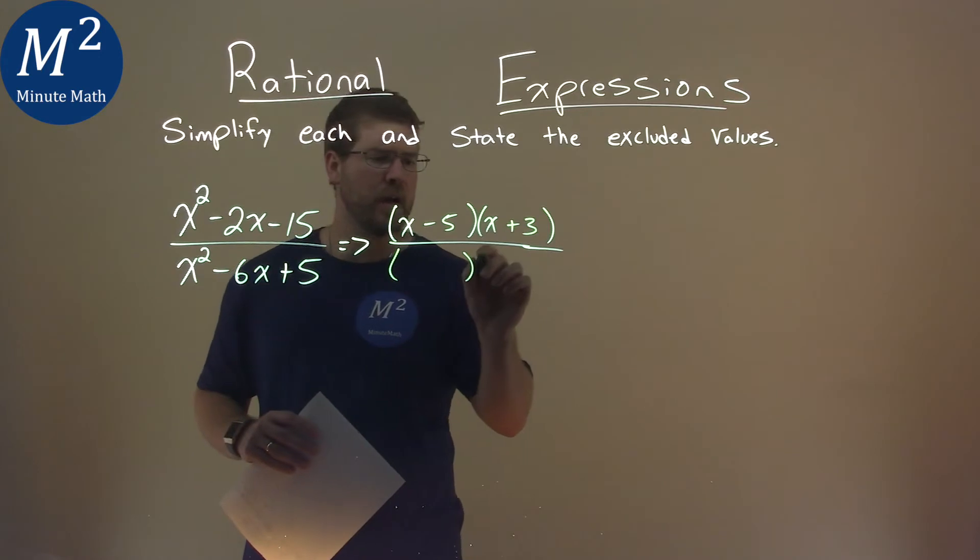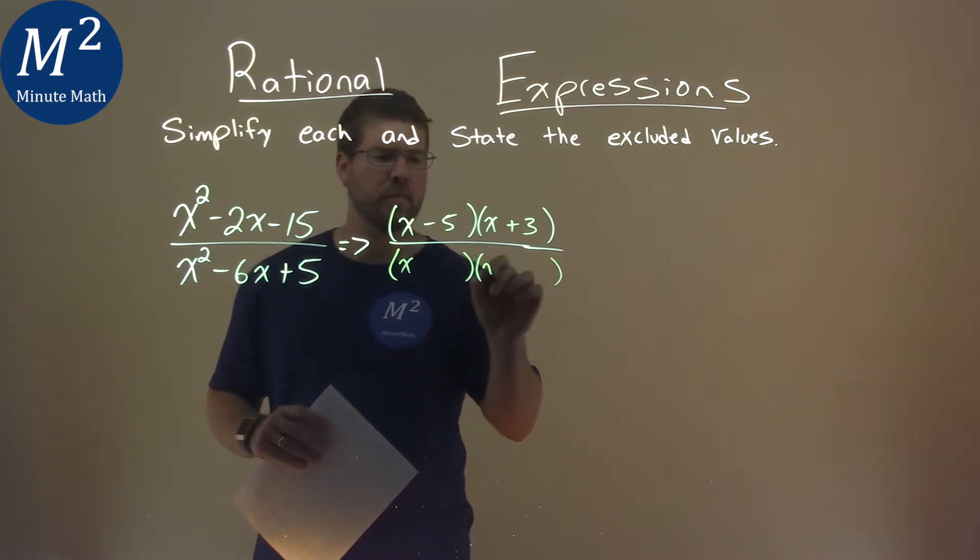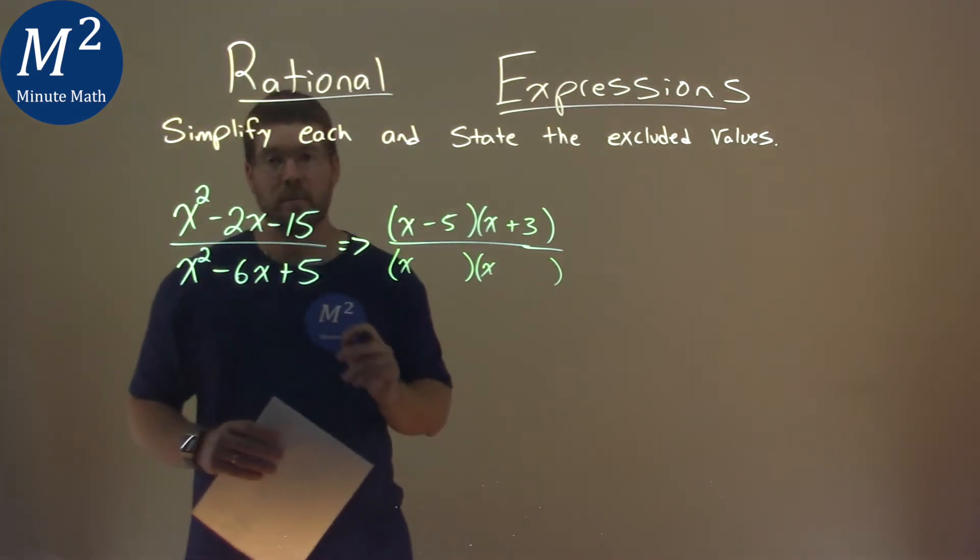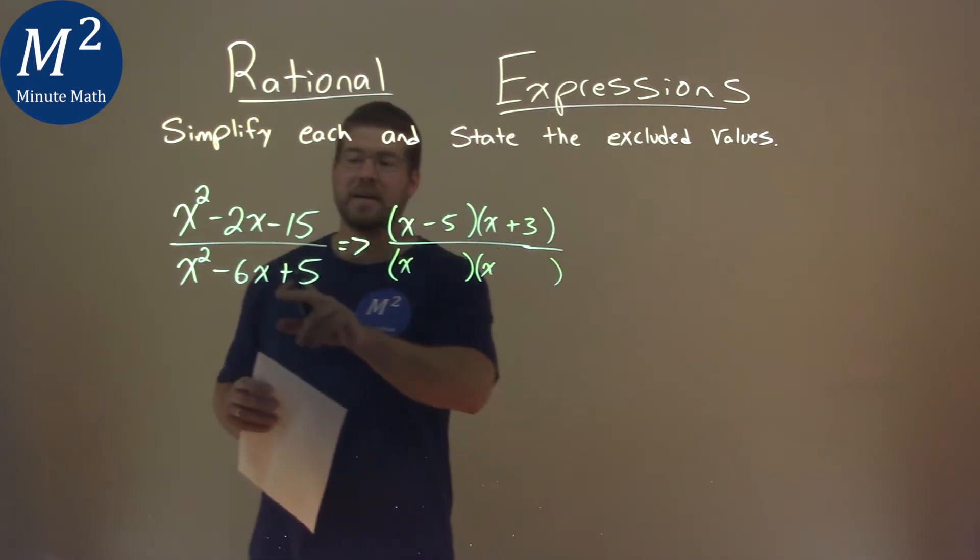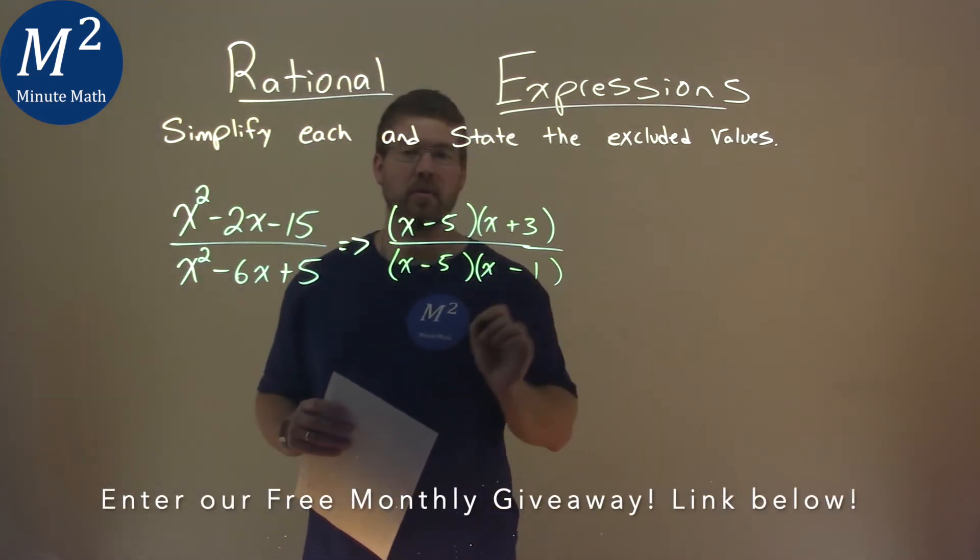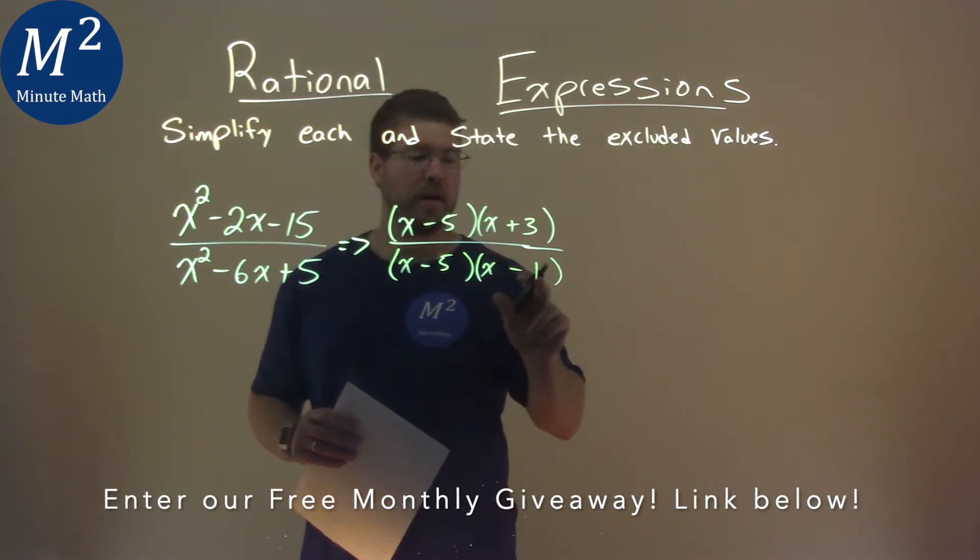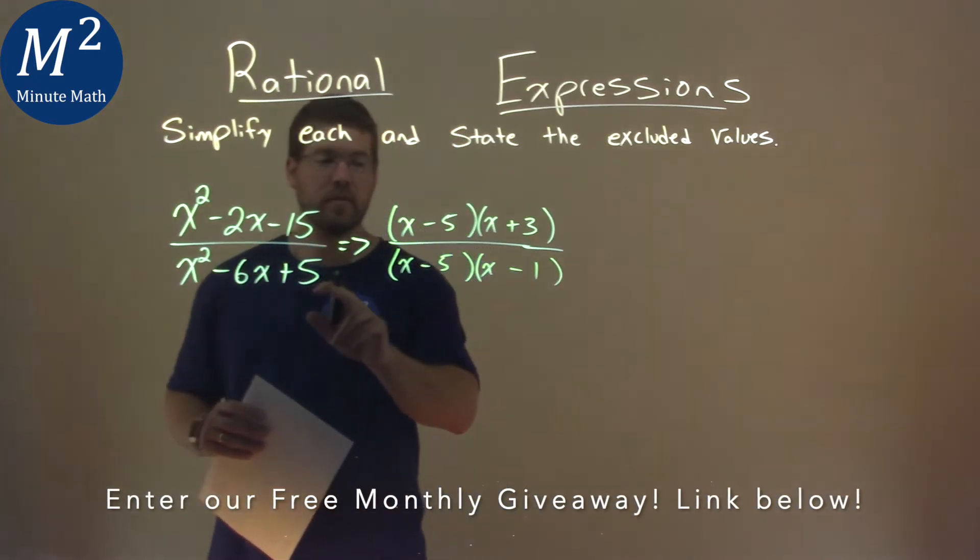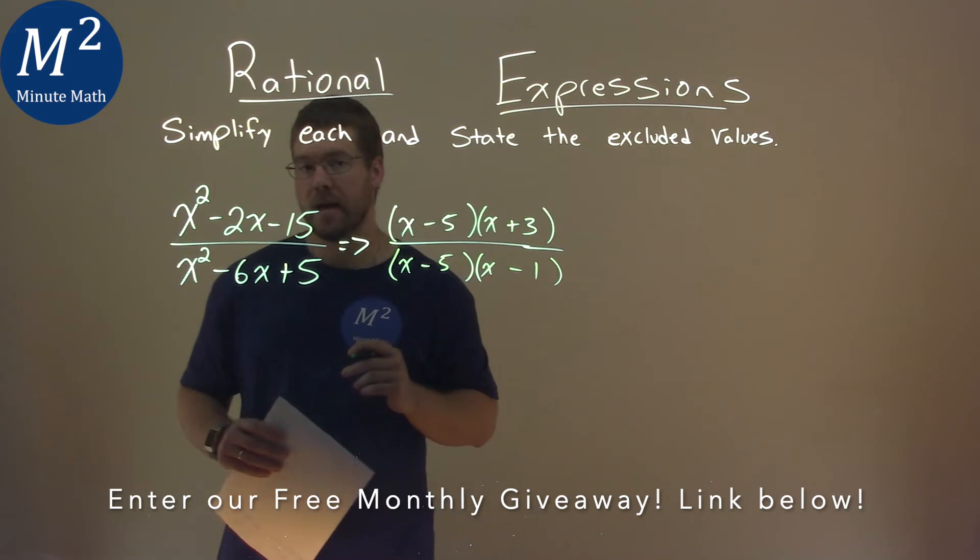Now we do the same thing with the denominator. What two numbers multiply to be positive 5 but add to be negative 6? That's minus 5 and minus 1. Negative 5 times negative 1 is positive 5, but when we add the two, we get negative 6.